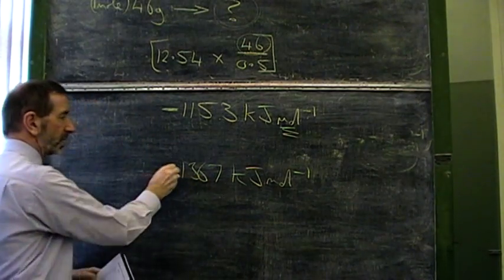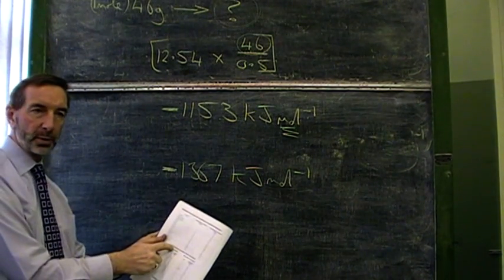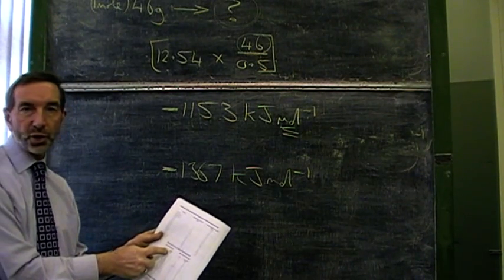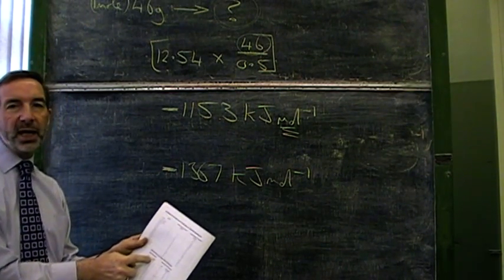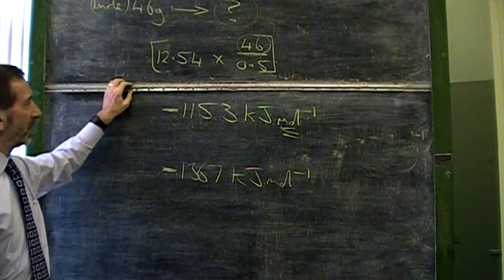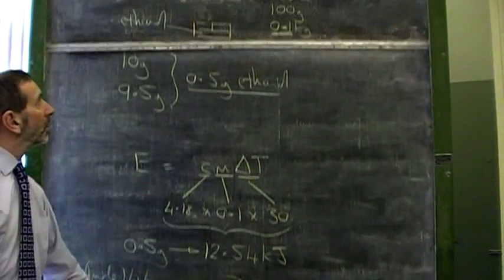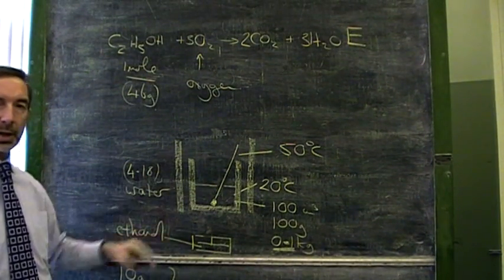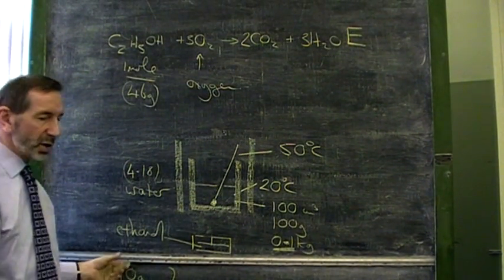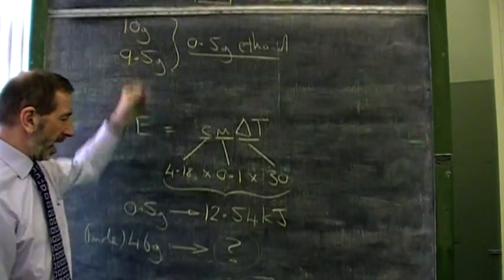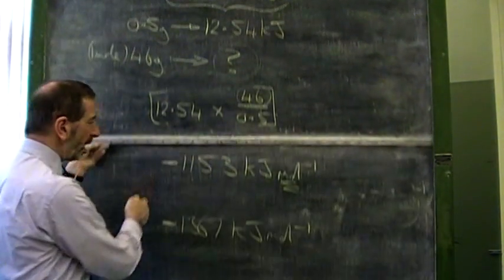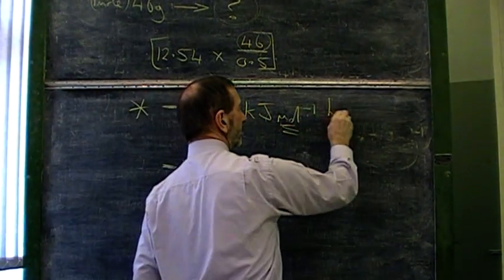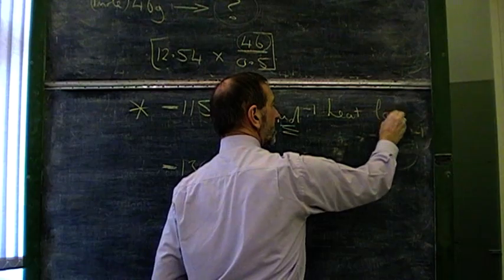So why the difference? Well, as we said, the value in the data book will have been done under ideal conditions, using pure oxygen and avoiding any heat loss. Our experiment used good equipment and probably was burned in air.